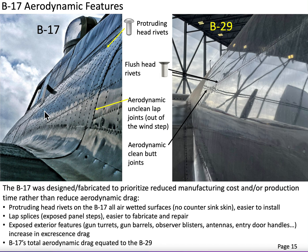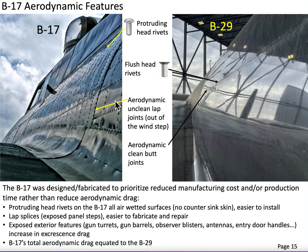The second feature we can observe is the splice configuration of the skin. On the B-17, a fuselage panel is connected to another panel by draping one over the other, with a fuselage frame on the inside for support, creating an out-of-the-wind step. This is called a lap splice — a single row of fasteners laps the forward panel over the aft panel, so air running across the surface has to step down from the forward panel to the aft panel.